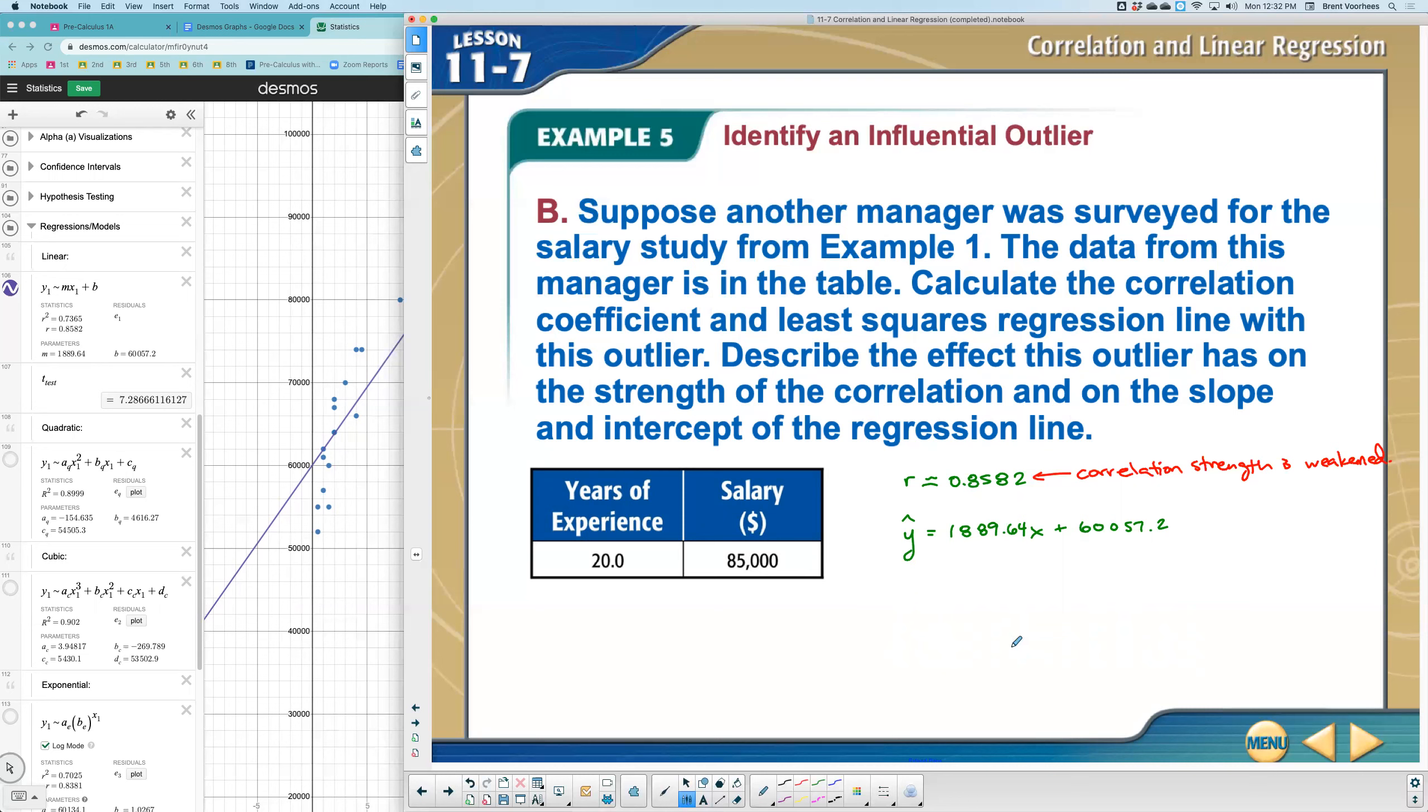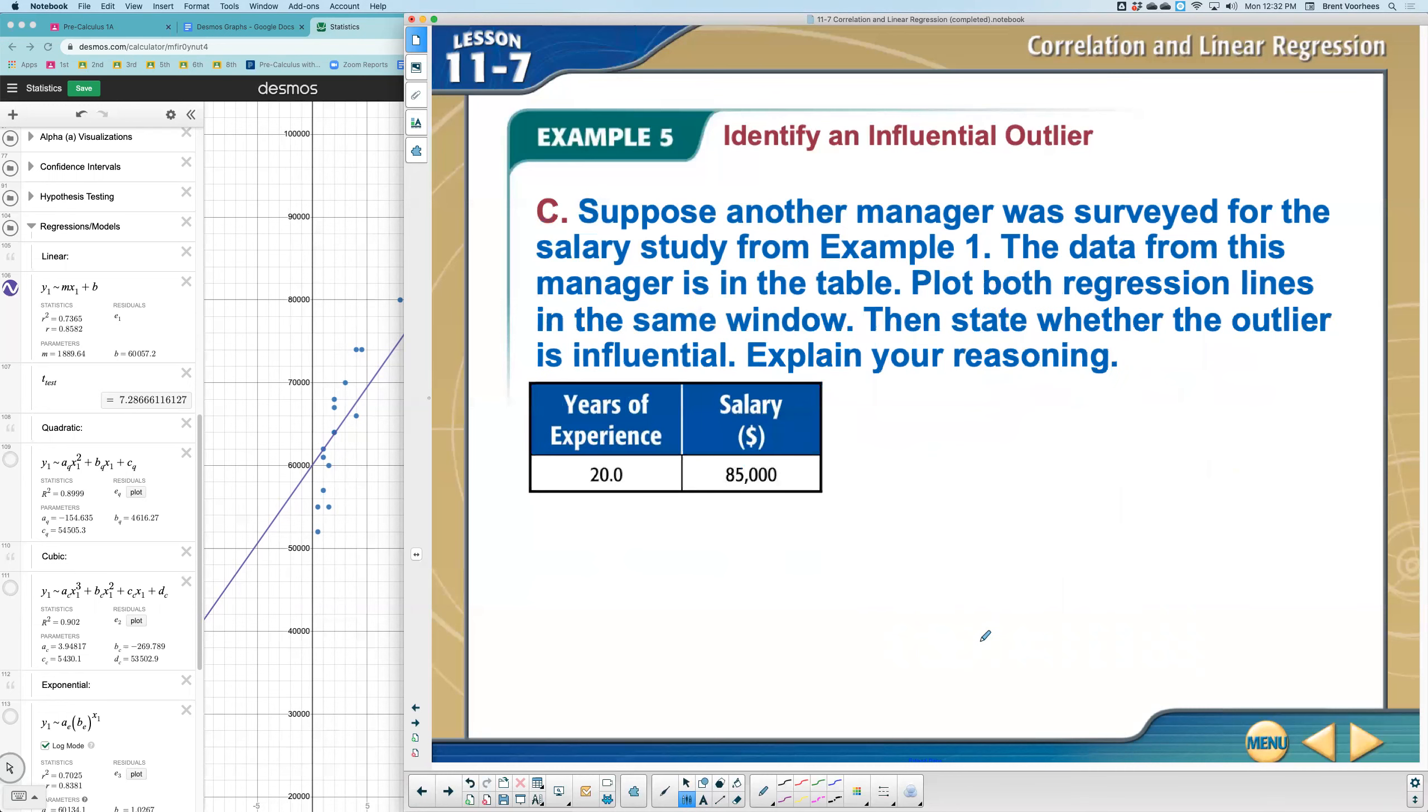And what does it now mean in terms of real world is that each year you work, you'd make less, but you would start with more according to this data. Okay. So here's part C.